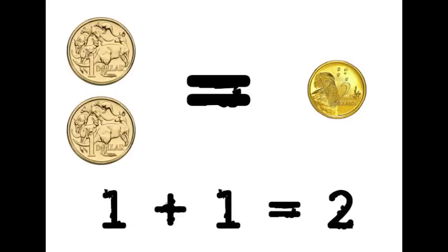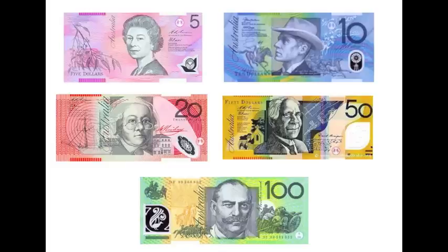And finally, one plus one equals two. Here are all our Australian notes: five dollars, ten dollars, twenty, fifty and one hundred.